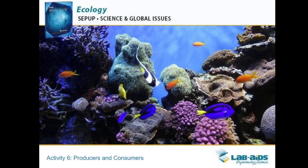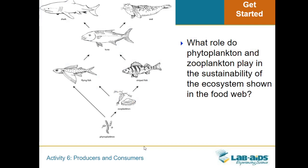Activity 6 is called Producers and Consumers, and we're starting to think about how energy and nutrients can move through an ecosystem and how that might affect its sustainability. We started by looking at this food web. Food webs are ways that we can see how energy and nutrients flow through the organisms within an ecosystem. Starting with phytoplankton at the bottom and zooplankton above them, a lot of you noted that they're setting the base and all other organisms are dependent on those.